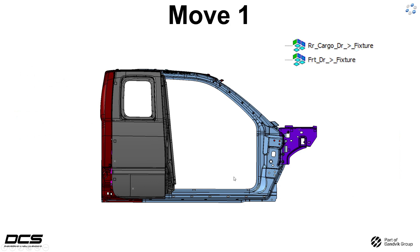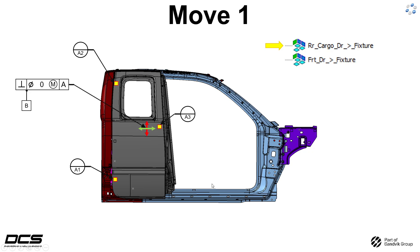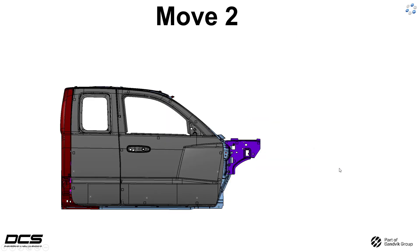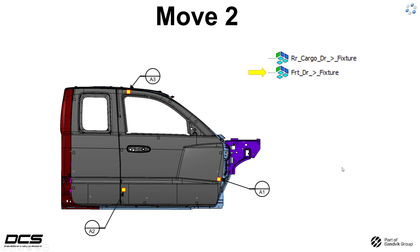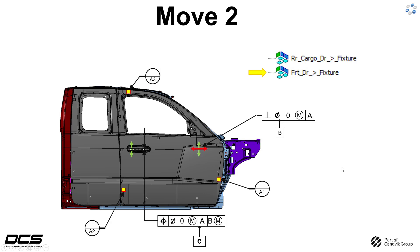So briefly, we're just going to go over these moves quickly. This is our first move — we're going to bring the rear door in. Three primaries here in yellow represent the fixture pads, and then a combination of the four-way and two-way that are going to constrain our secondary and tertiary controls. Same thing goes for the front door: three primaries, and then our four-way and our two-way. These moves are already in the model.